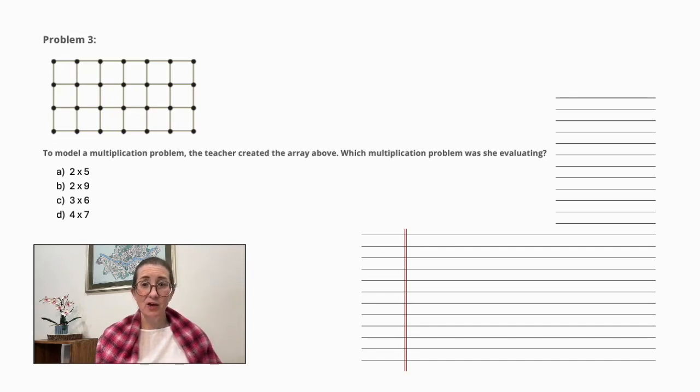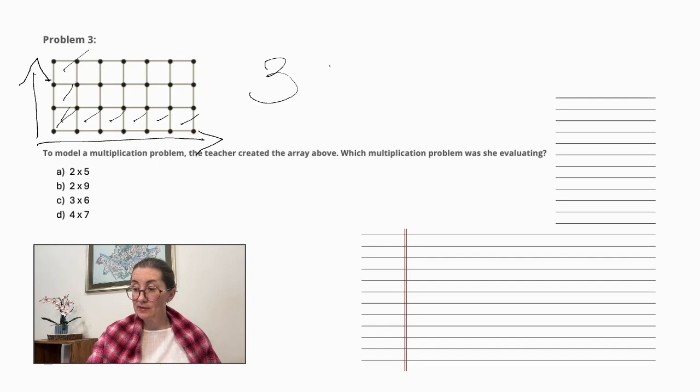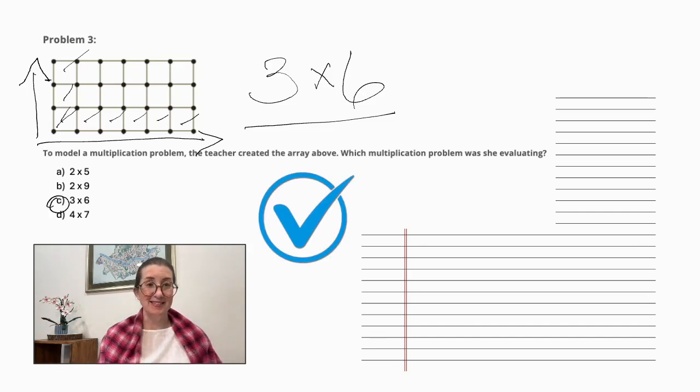What is an array? An array is a way to represent multiplication or division using columns and rows. The columns go up vertically. And the rows go across horizontally. So in the columns we have 1, 2, 3. And in the rows we have 1, 2, 3, 4, 5, 6. So the multiplication problem that the teacher was representing with this array is C. 3 times 6.